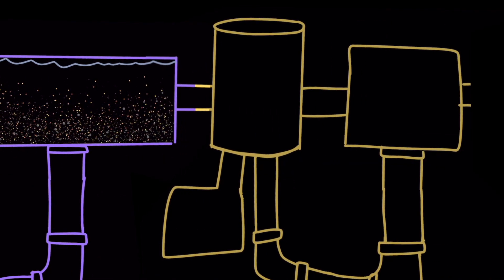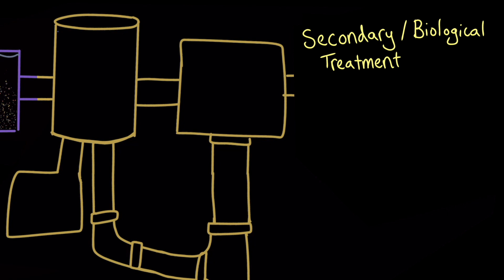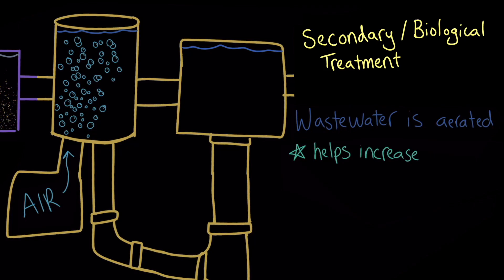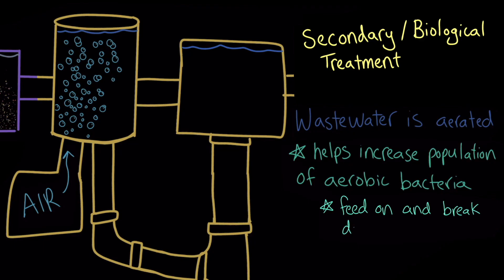The water then moves on to secondary or biological treatment. During this stage, the wastewater is aerated, or mixed with air, to create perfect conditions to help increase the population of aerobic bacteria. Aerobic bacteria are important because they quickly feed on and break down the organic waste in the water.